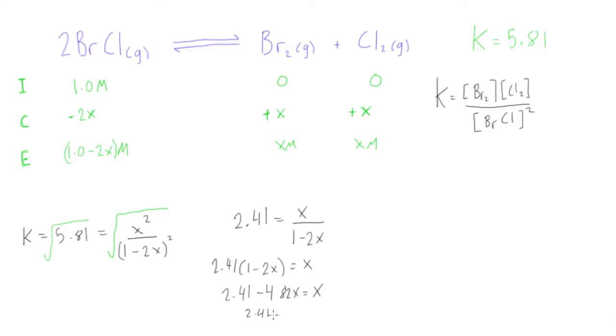Keep going, running out of space. We get basically 2.41 is equal to 5.82X. Basically now we just get 2.41 over 5.82 is equal to X. And when we just punch this in our calculator, we'll find that X is equal to 0.41, and we didn't really carry units through, but this is in fact molar, as X is in units of moles per liter.